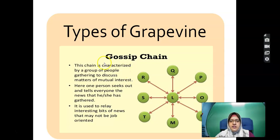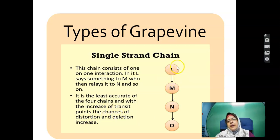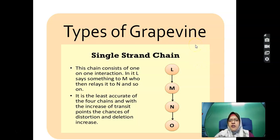The gossip chain is characterised by a group of people. As the number of transit points increases, the chances of distortion and deletion increase. Remember the game where people line up and pass a message — by the time it reaches the end it has completely changed. For example, 'Ali sells batik cloth' becomes 'Aminah went to the zoo' by the end.